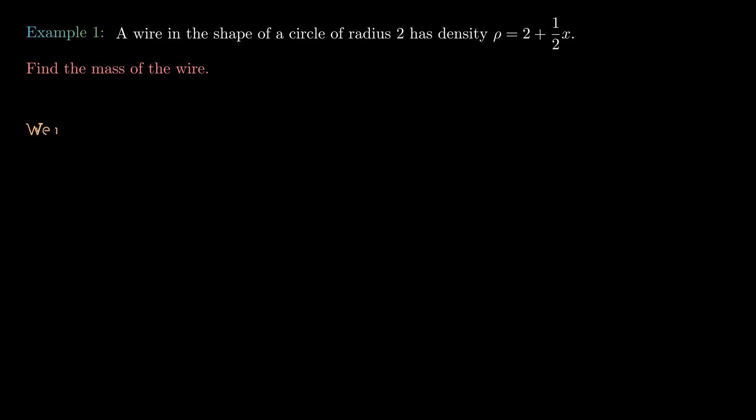The mass is given by the line integral over the curve C of the density function. We first parameterize the wire using the function α(t) = (2sin t, 2cos t), with t varying from -π to π.